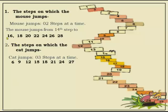The mouse's steps follow the two-times table and the cat's steps follow the three-times table. When the mouse is on the 16th step, the cat is on the 6th. When the mouse is on the 18th, the cat is on the 9th. When the mouse is on the 20th, the cat is on the 12th. When the mouse is on the 22nd, the cat is on the 15th. On the 24th and 18th; 26th and 21st. When the mouse reaches the 28th step and enters the hole, the cat is only on the 24th step.